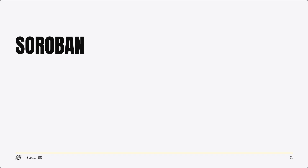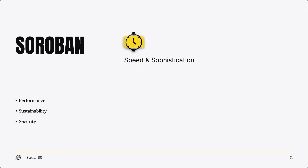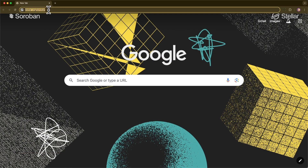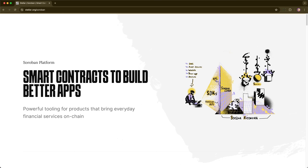Next, let's go over Soroban. Soroban is built with performance, sustainability, and security in mind. Soroban enables you to build complex apps without performance bottlenecks. It uses Rust and WebAssembly for superior performance, ensures that transactions never conflict, and allows for true parallel execution, significantly increasing throughput. Check out stellar.org/Soroban to learn more.